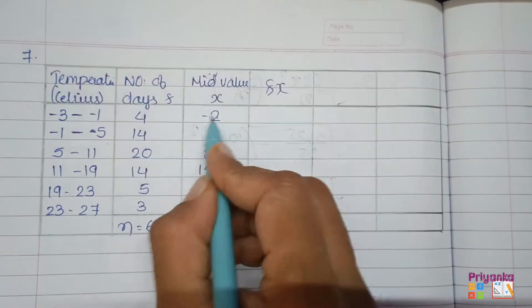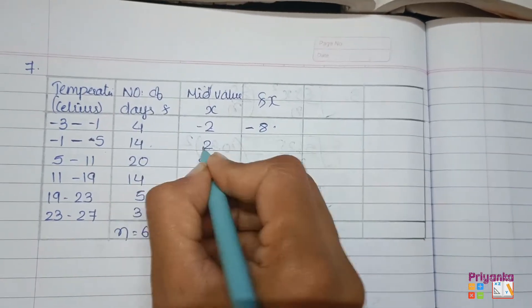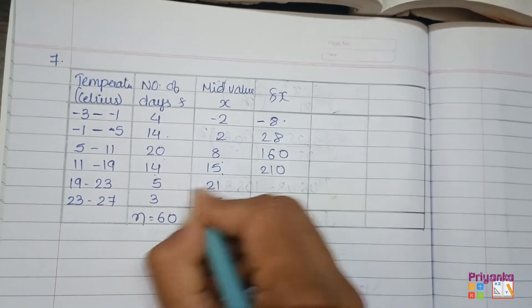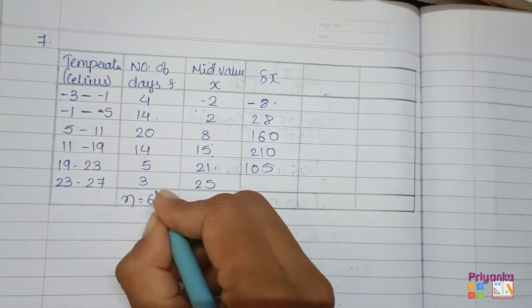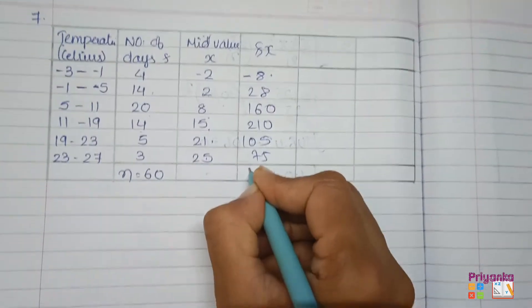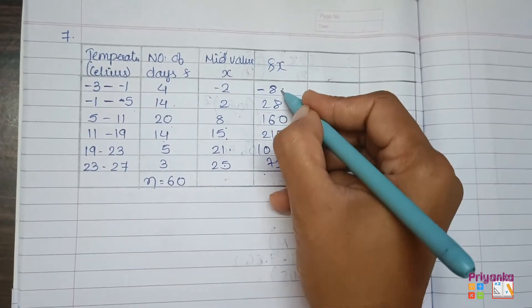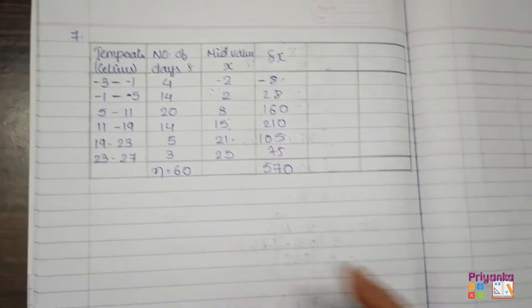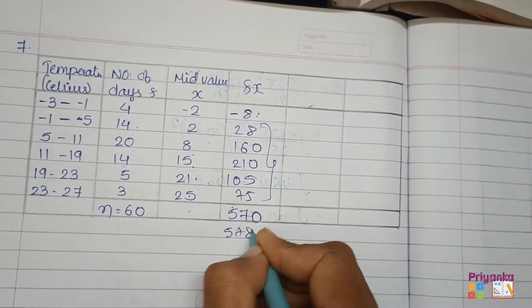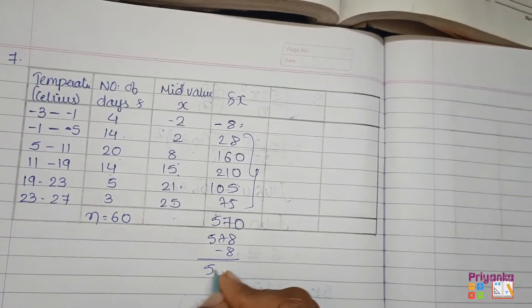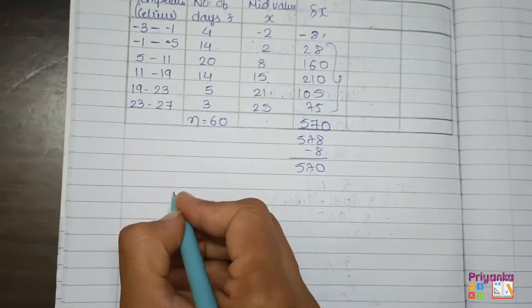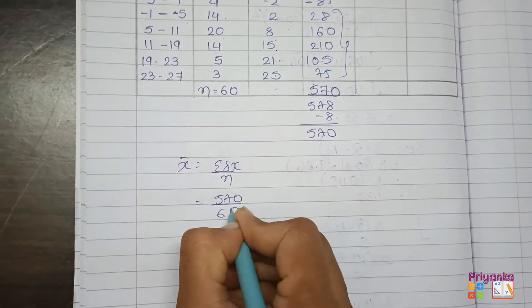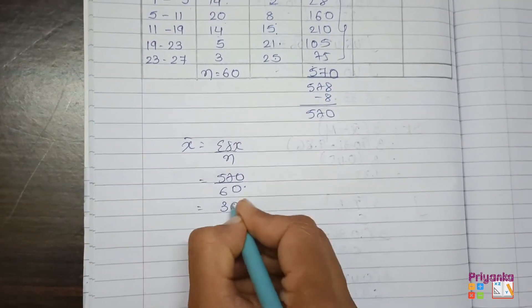After finding the mid value, the next step is to find out fx. That is minus two multiply by eight will be minus eight, fourteen into two is twenty-eight, twenty into eight is one sixty, fourteen into fifteen is two ten, five into twenty-one is one zero five, three into twenty-five is seventy-five, and the total... while going with the total, positive numbers minus the negative number, you get 570 for fx.